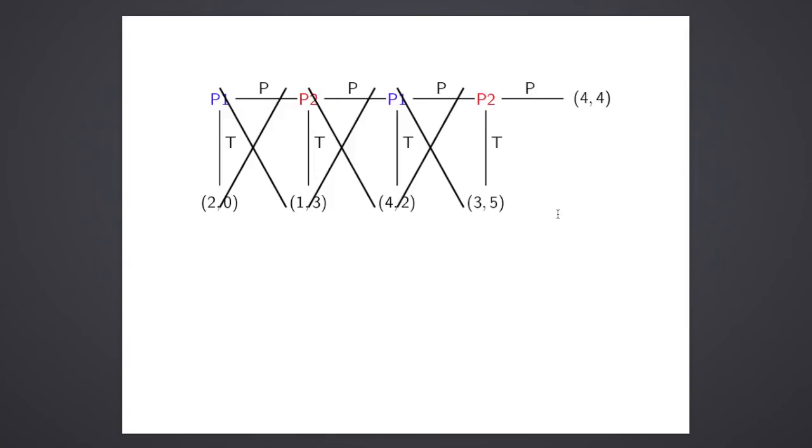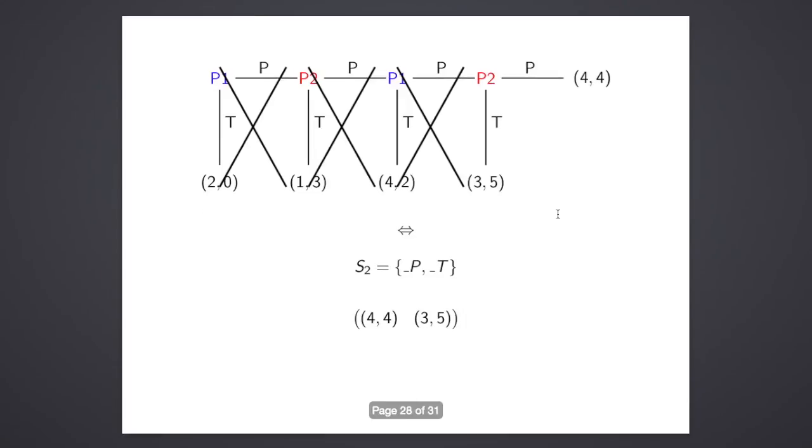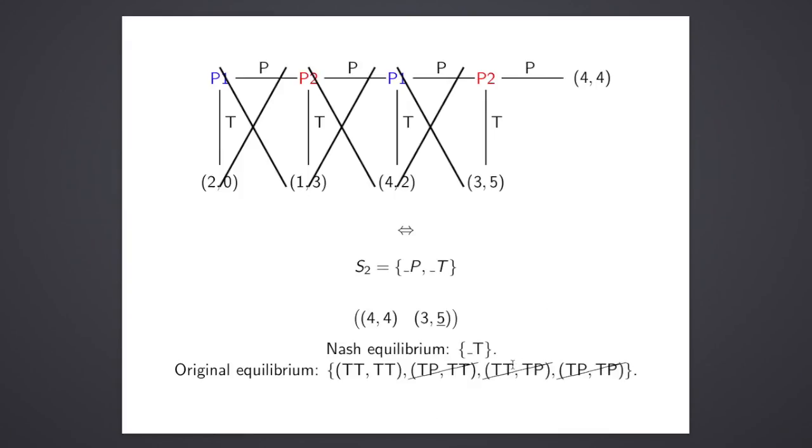Now if we look at the last sub-game, which is this single-player game, which has this strategy set, and this very simple normal form representation, we see that in this instance the Nash equilibria is when the second player takes. And so we have a Nash equilibria that is just to take, which now allows us to remove yet another one of the original Nash equilibria. And so we have that the only equilibria of the overall game that is also an equilibria for every single sub-game is for all players at all times to take.